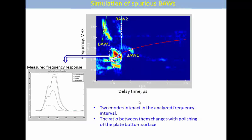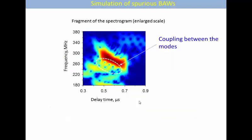If you look more carefully on the signals in this area, this is a measured frequency response for different treatment of the bottom. This is polished and this is roughly polished, rough treating. We can see that actually there are two signals here which interact with each other, and the ratio between them changes with polishing of the plate bottom surface. It agrees again with our simulations because we have two lines here which are nearly parallel and intersect in this region. This is a fragment of the spectrum which also demonstrates that there is some kind of interference between two different modes in this area.